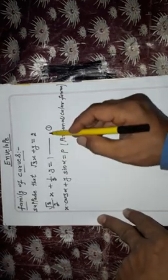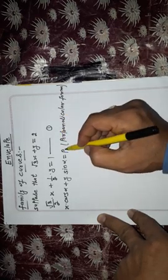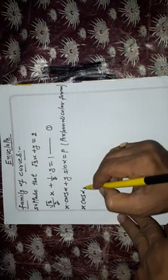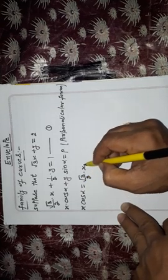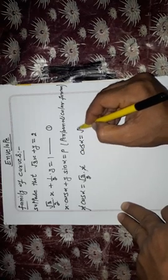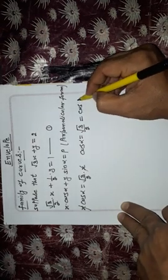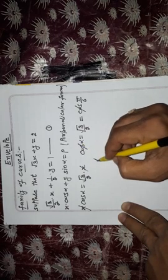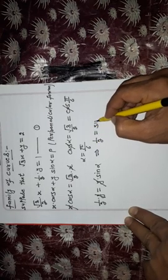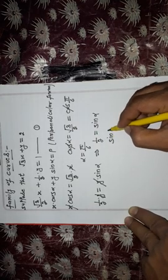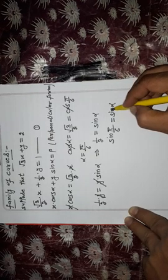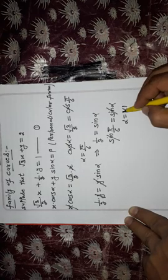Comparing these two equations: x·cos α = (√3/2)·x, so cos α = √3/2, which means cos α = cos(π/6), therefore α = π/6. Similarly, (1/2)·y = y·sin α, so sin α = 1/2 = sin(π/6), giving α = π/6.